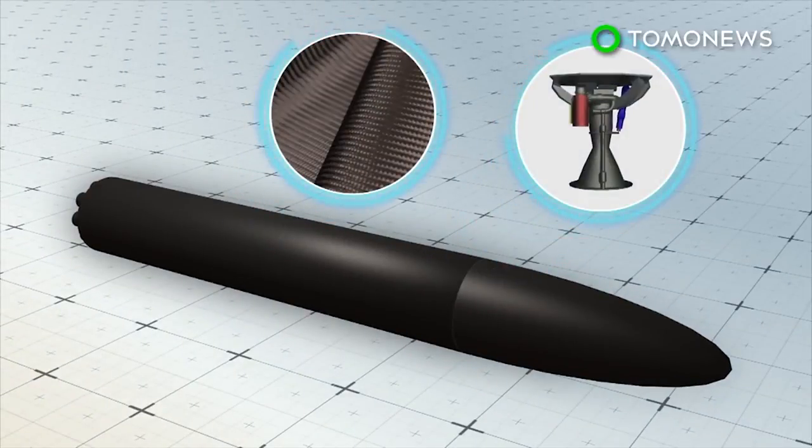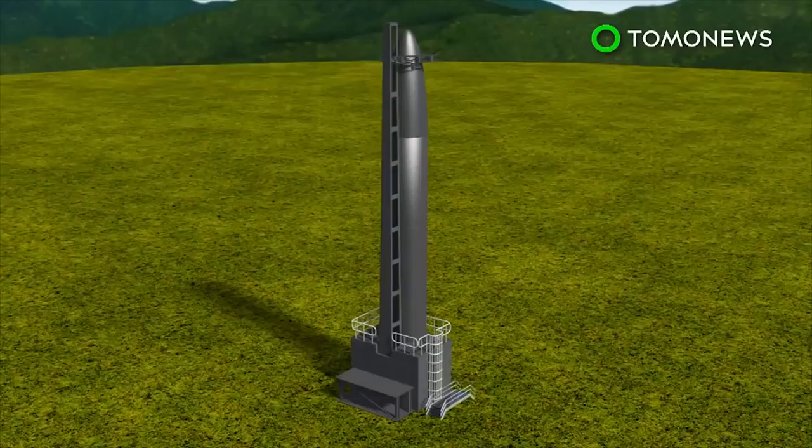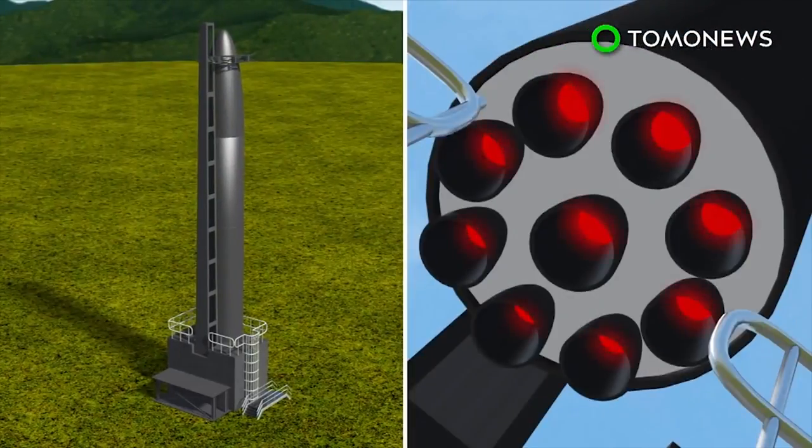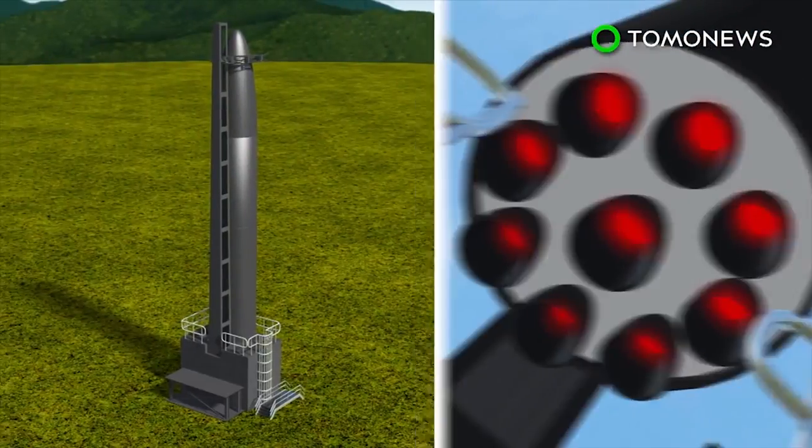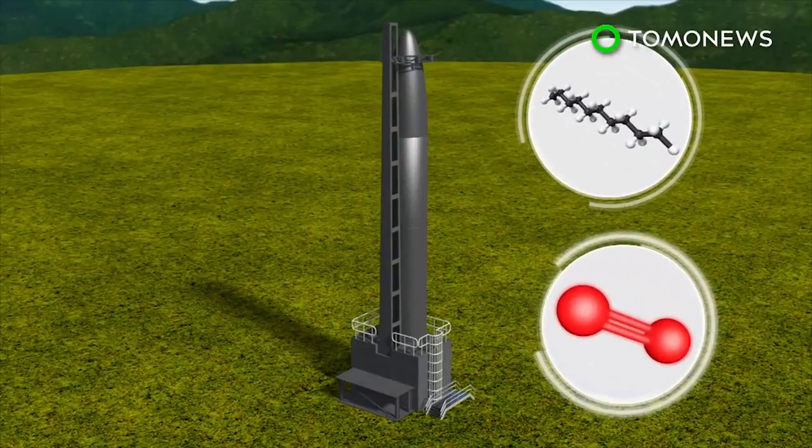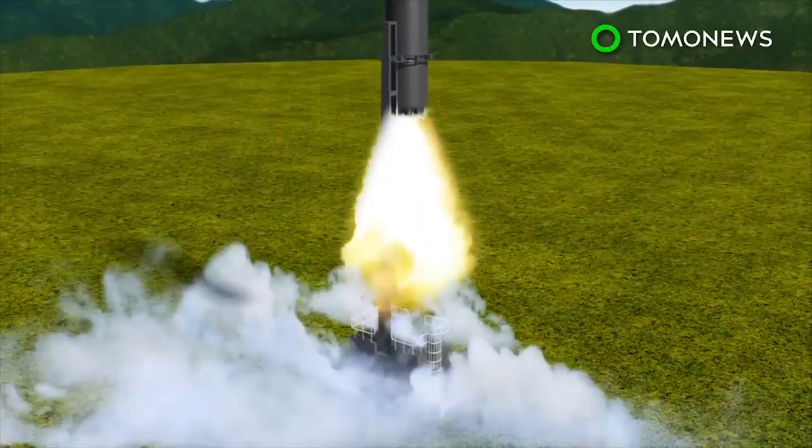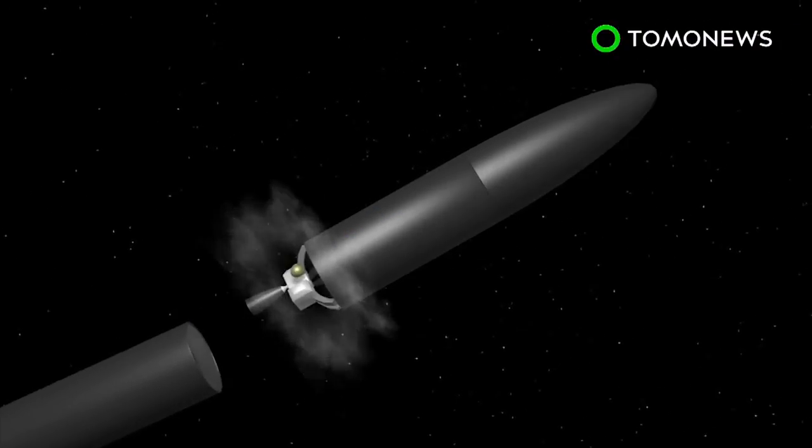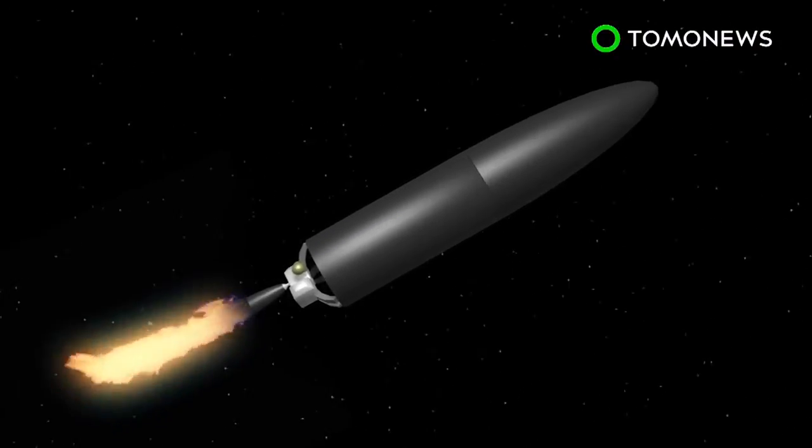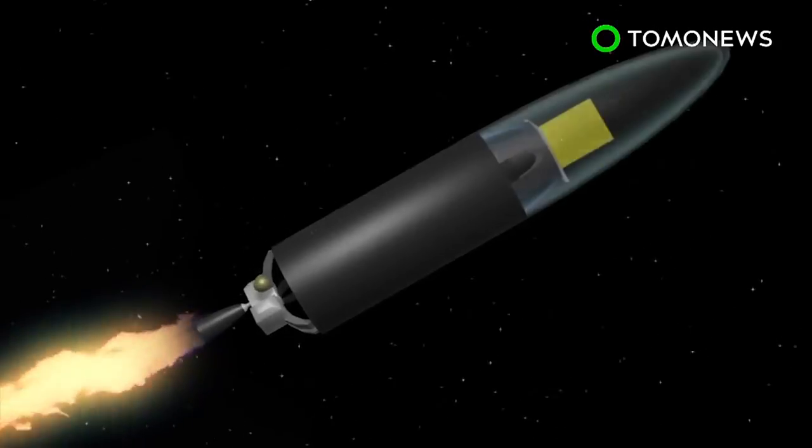The rocket's first stage has a cluster of nine electric engines that burn liquid oxygen and refined kerosene. The second stage has a single vacuum-optimized engine that can carry payloads weighing up to 225 kilograms.